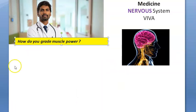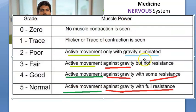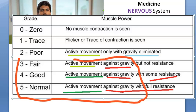How do you grade muscle power? We grade it as 0 to 5. Grade 5 is the best — the patient can move against gravity and resistance. Grade 0 is completely paralyzed. Grade 1 is just a flicker. Grades 3, 4, and 5 all involve movement against gravity.